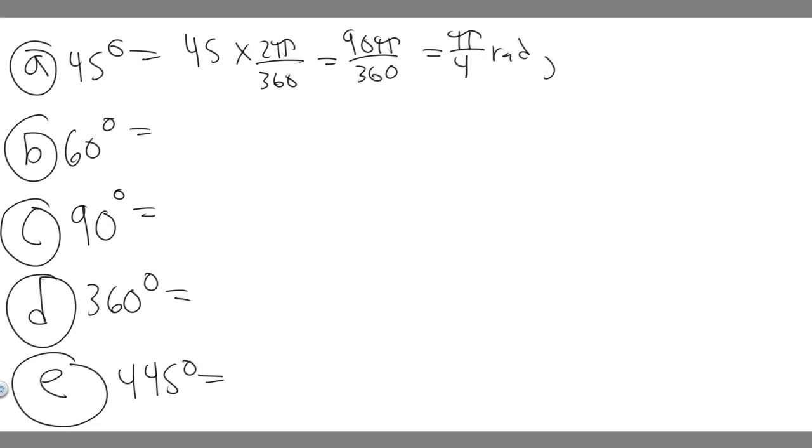But then we also want to rewrite it as a numerical value. So π over 4 radians as a fraction of π. And then we want to rewrite it as a decimal. So you just want to plug in your calculator, so just do π divided by 4. And you'll get 0.78539 and so on. I'm just going to round to 0.785, so 0.785 radians. So this right here is A, so let's move on to B.